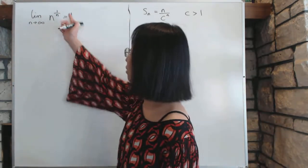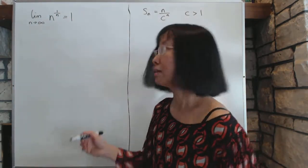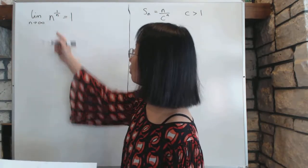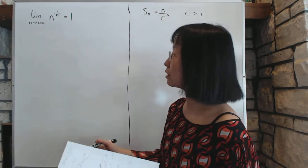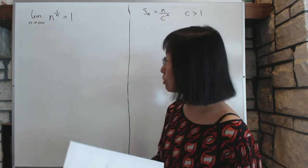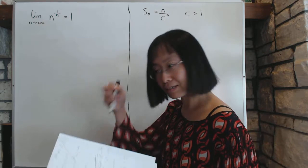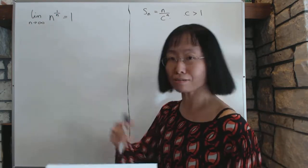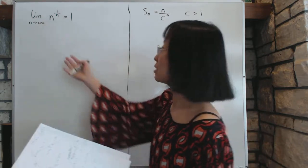The limit of n to the power of 1 over n, what is it? That is not obvious to see at all, because as n gets bigger, the value gets bigger, but 1 over n to the power of 1 over n makes it smaller, so which way is it going? Is it getting bigger or smaller? Is it going to 0 or infinity or something else? It's hard to tell.